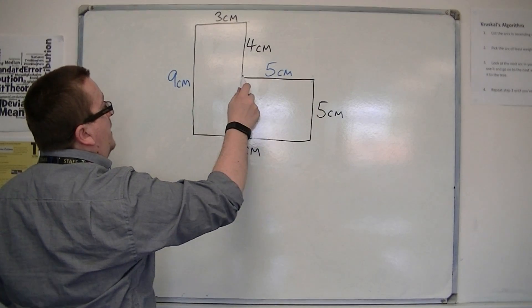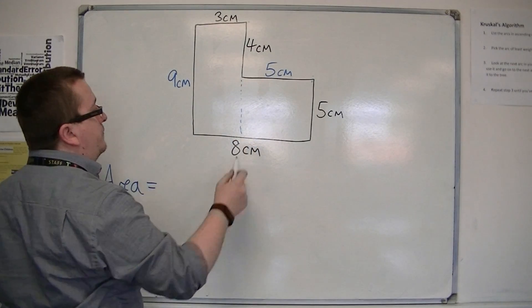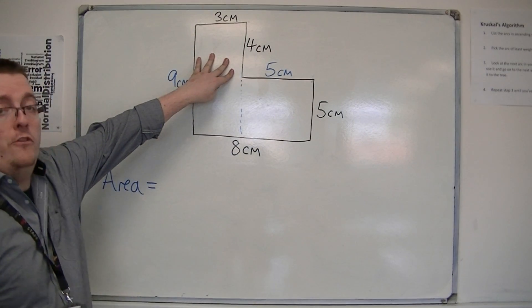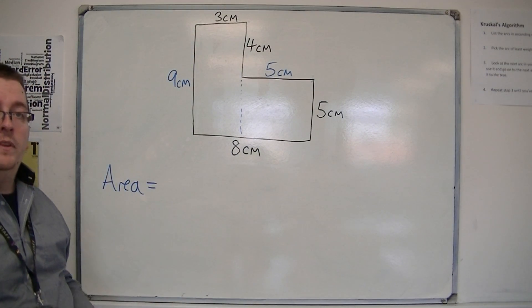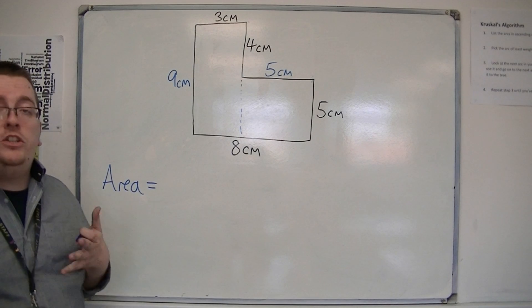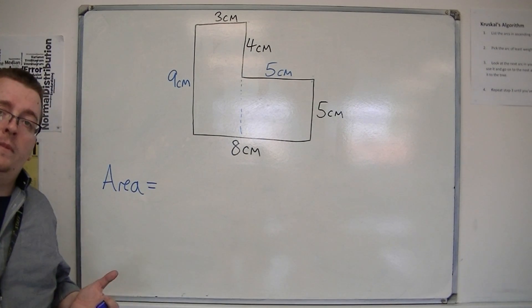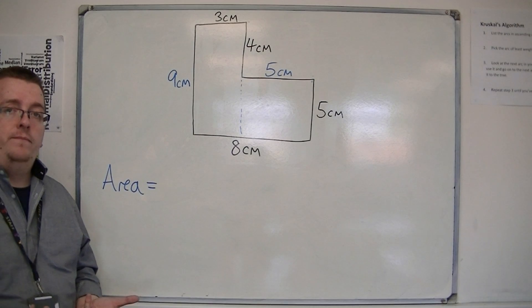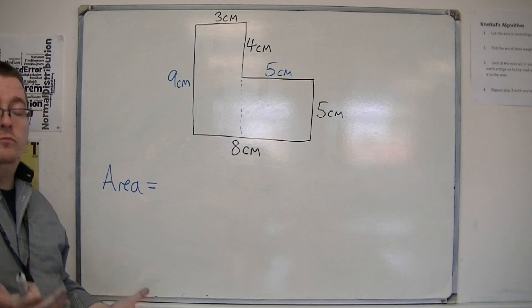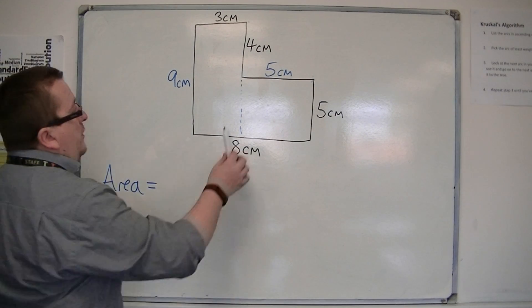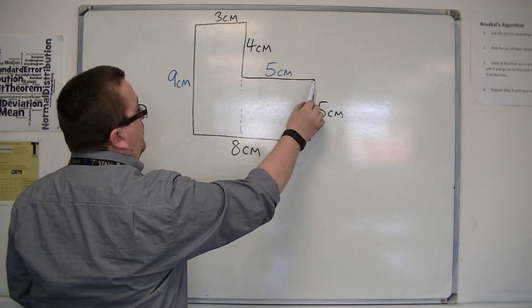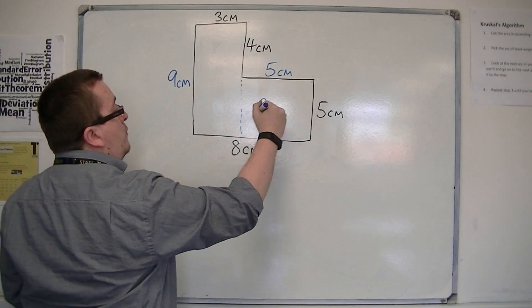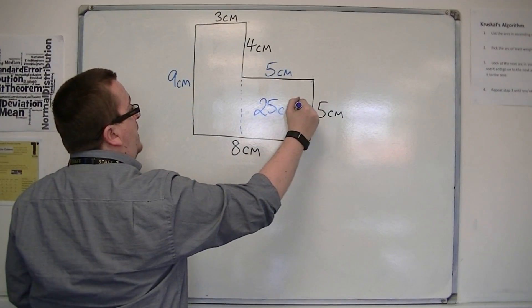You could split it down this way and find the area of this shape plus the area of that shape to get the whole area. Whichever way you do it, each approach will give you the same area. I'm going to go with the last split I drew. We've got five centimetres by five centimetres — this is actually a square — so this has an area of twenty-five centimetres squared.